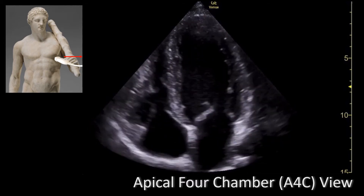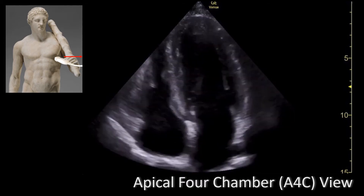The left ventricle is also divided into equal thirds, perpendicular to the long axis of the heart. This generates three sections: the basal, which is closer to the valve; the mid cavity, which includes the papillary muscles; and the apex.